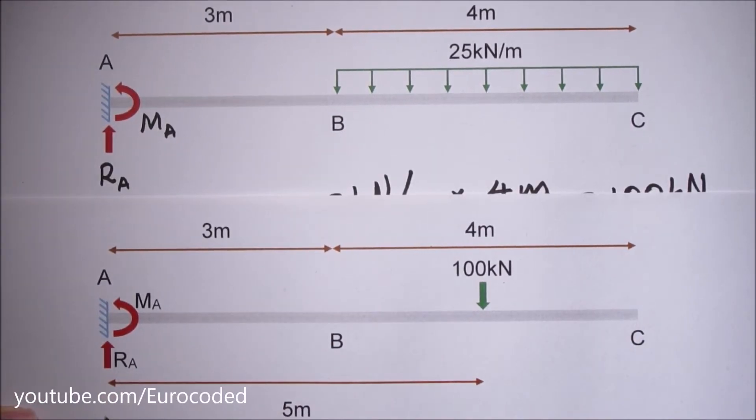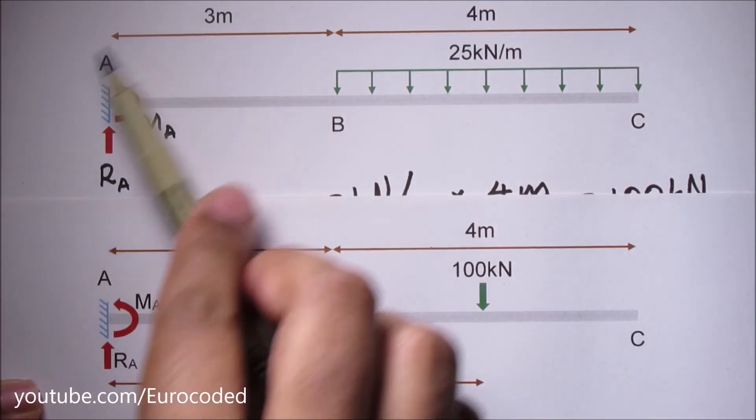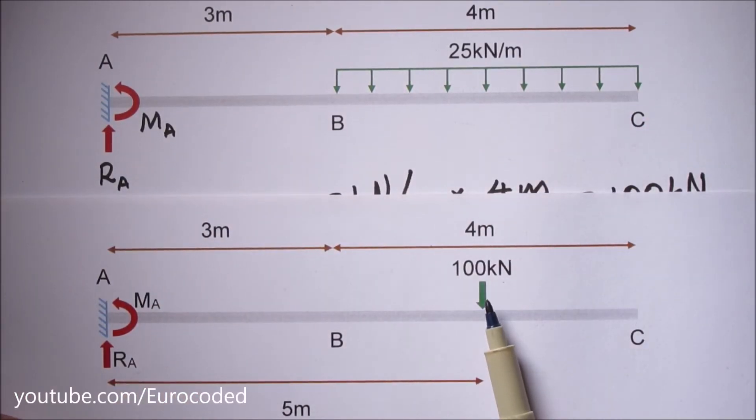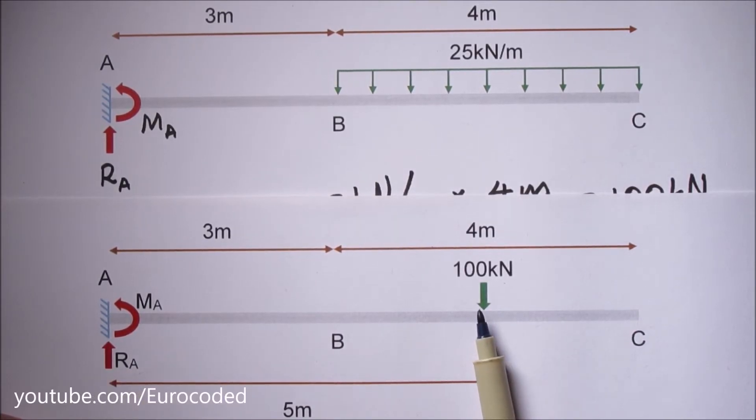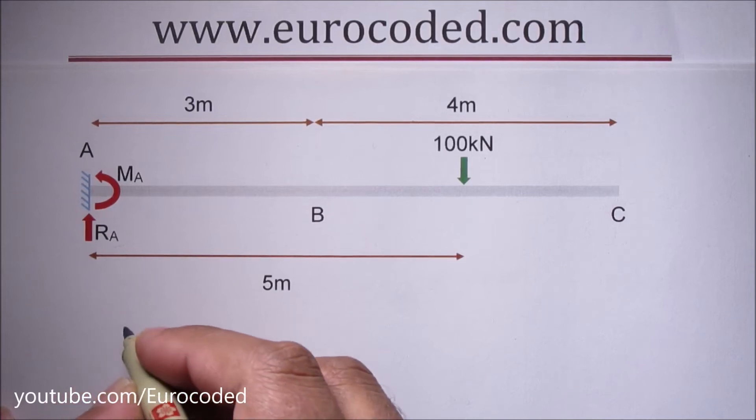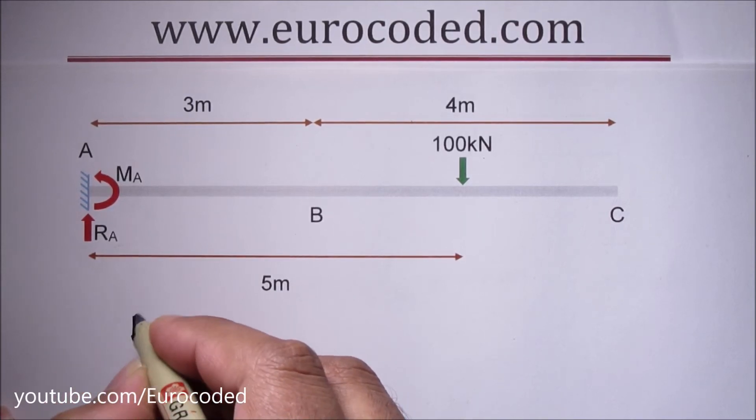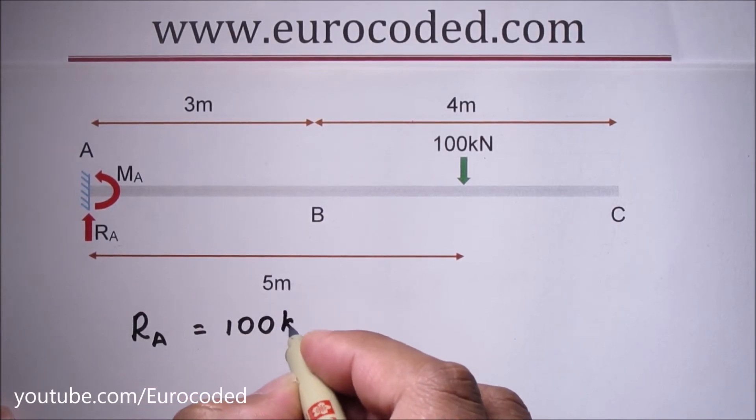This is our simplified diagram representing the same arrangement. We have a point load which is 100 kN in magnitude and it is acting at a point which is 5 meters from this fixed support. That is basically the center point between B and C. Taking vertical equilibrium we can write RA is equal to 100 kN.